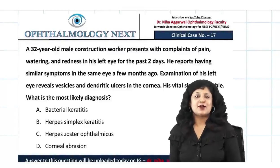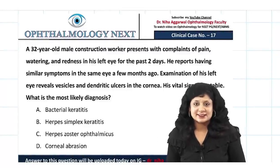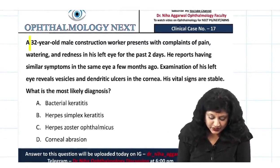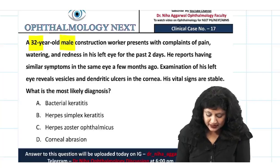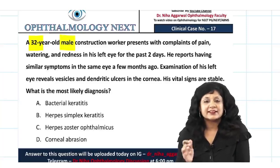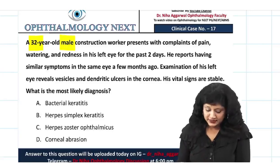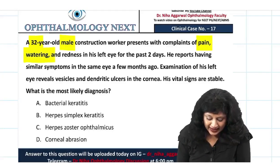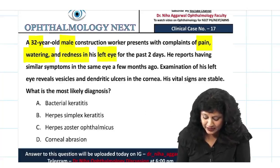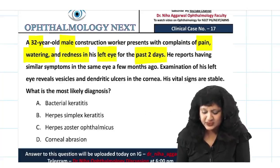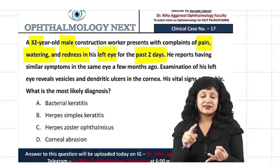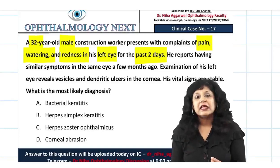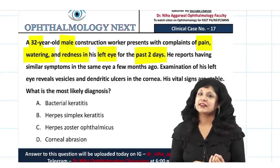Welcome to yet another session of clinical scenarios. This is case number 17. We have a patient who is a 32-year-old male construction worker — the environment is important — presenting with pain, watering, and redness in the left eye for the past two days. This is an acute problem and the complaints are pain, redness, and watering.